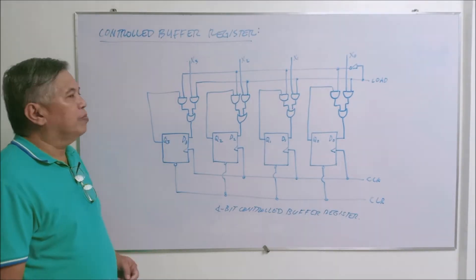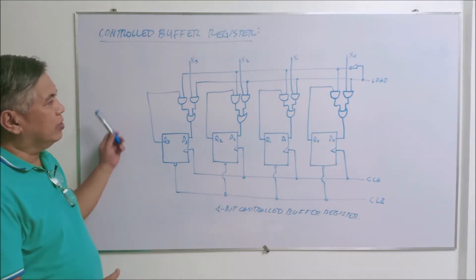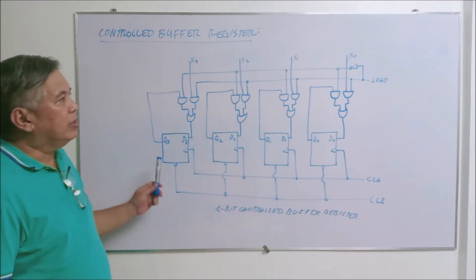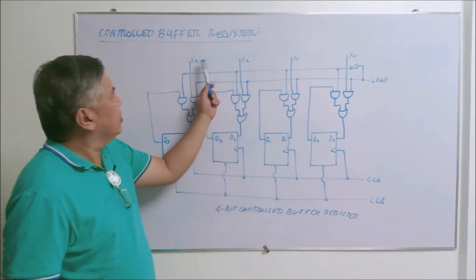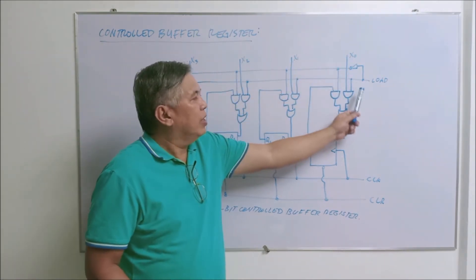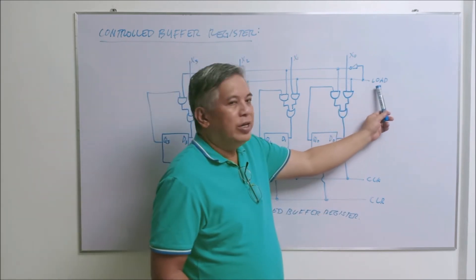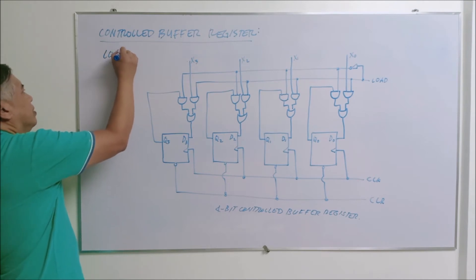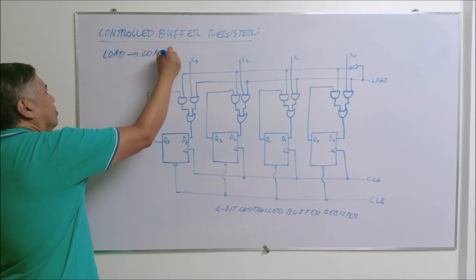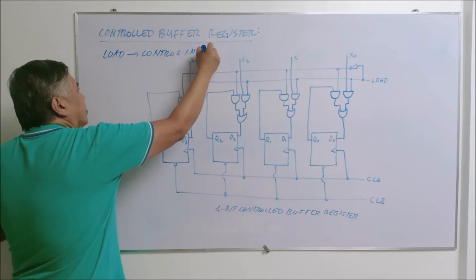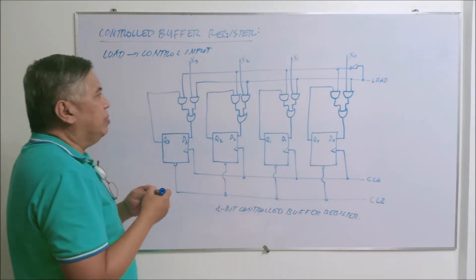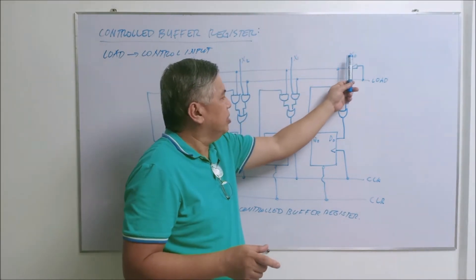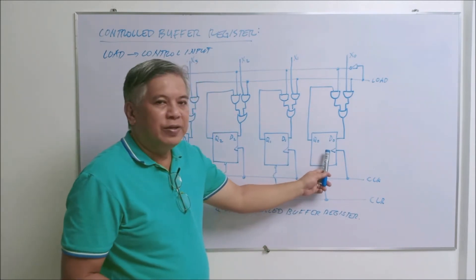We go now to the controlled buffer register. This is actually the same as the buffer register we previously discussed, but this time the transmission of X3, X2, X1, and X0 is controlled by the load input. Load is your control input — it determines when X3, X2, X1, and X0 can be transmitted towards your D inputs.